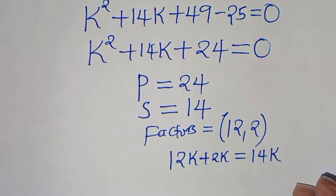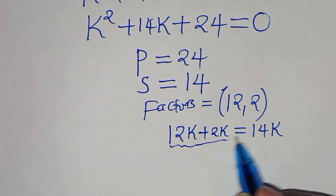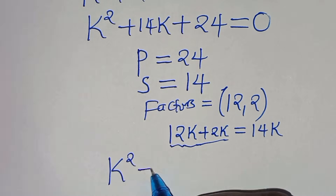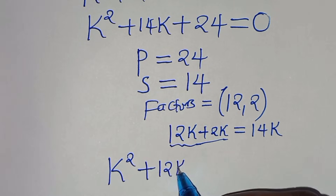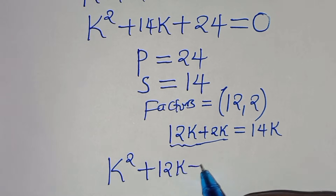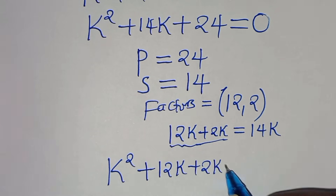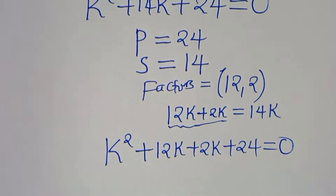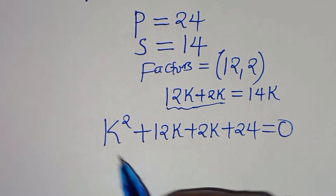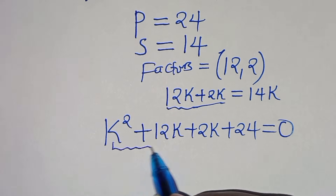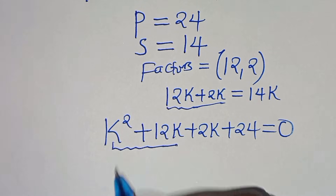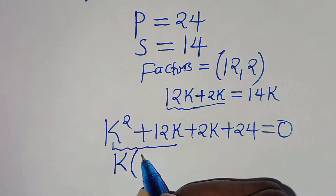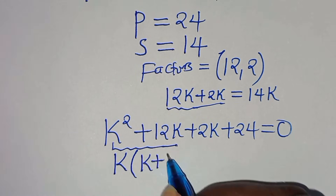So we can substitute this into the equation, so that we have k² plus 12k plus 2k plus 24, this is equal to zero. From the first part, k is common so we can factor out k, so we have k times (k plus 12).